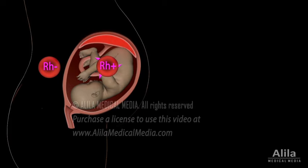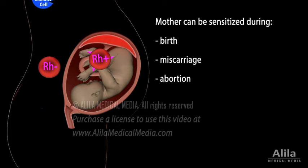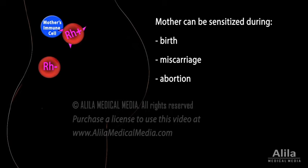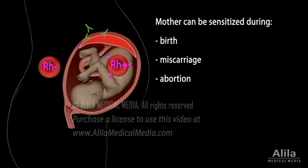However, at birth, or if a miscarriage or abortion occurs, the tearing of the placenta exposes fetal blood to the mother, who then responds by producing anti-D antibodies. Because antibody production takes some time, it does not affect the first baby. But if the mother is again pregnant with another RH positive fetus, her antibodies, being small enough to cross the placenta, can now cause hemolysis.